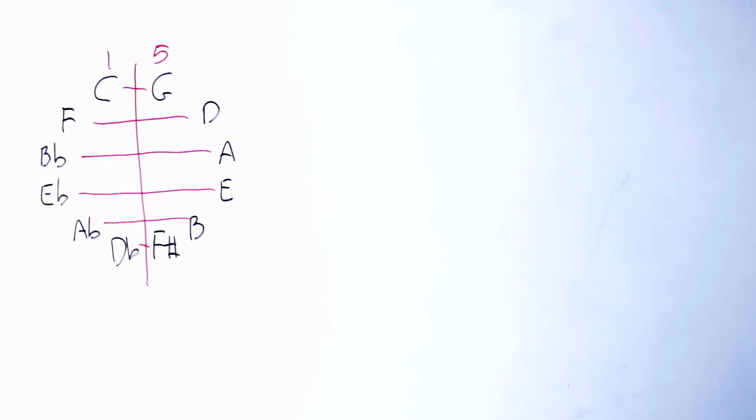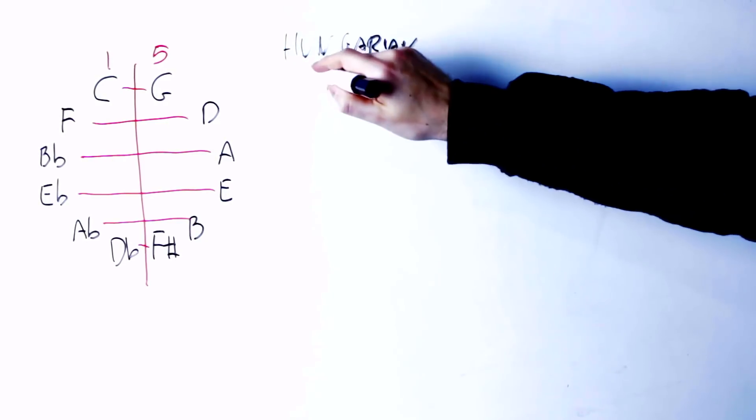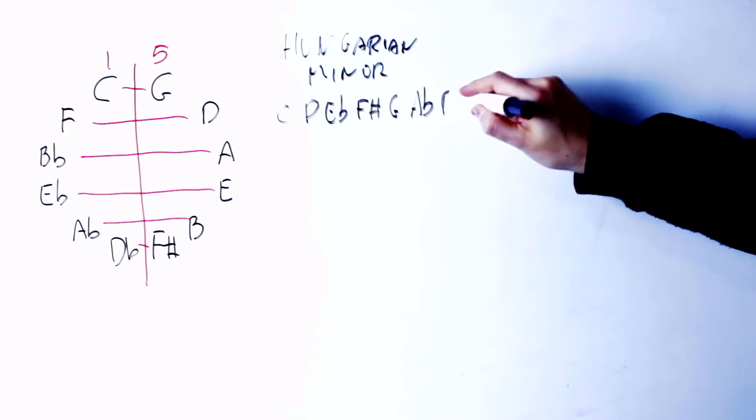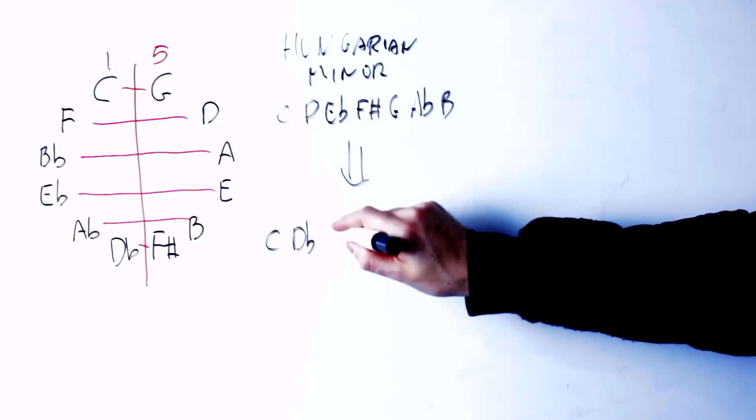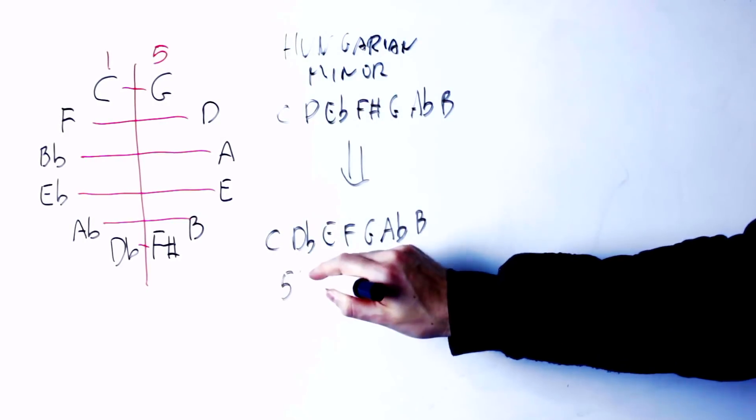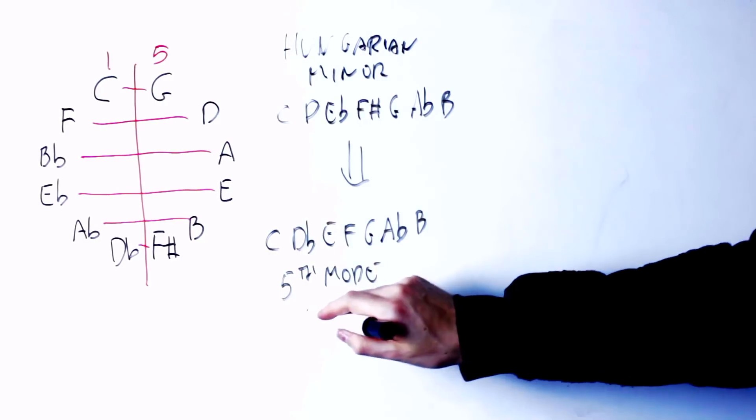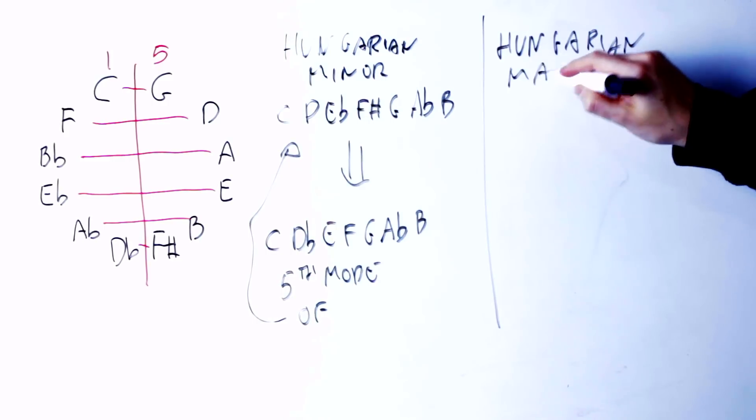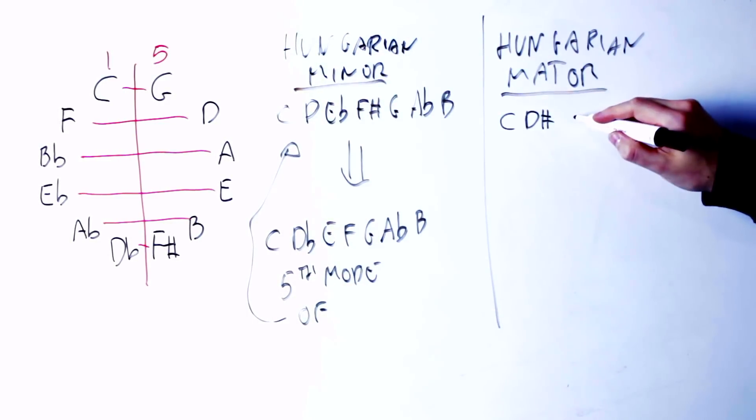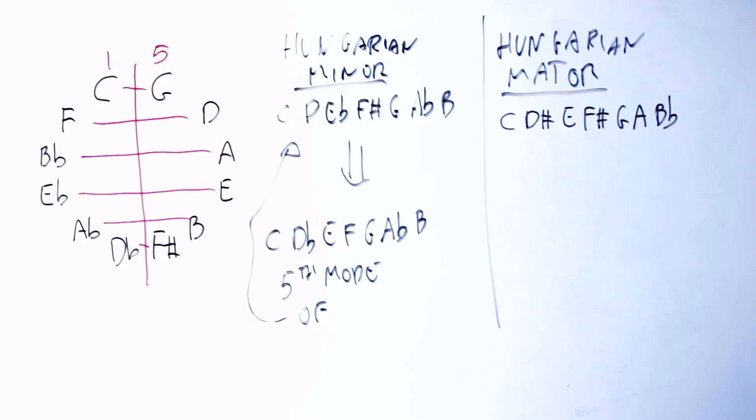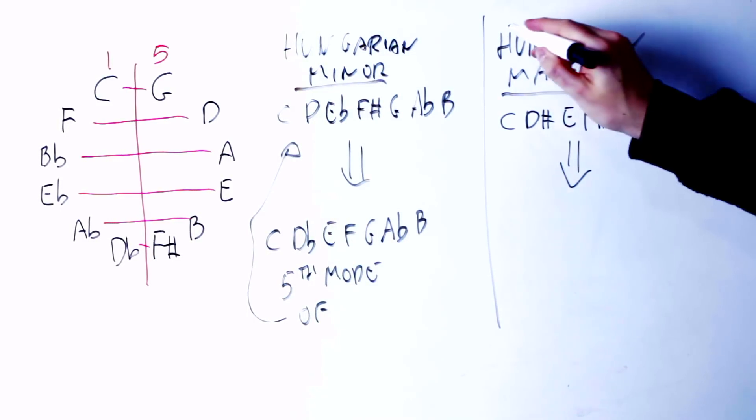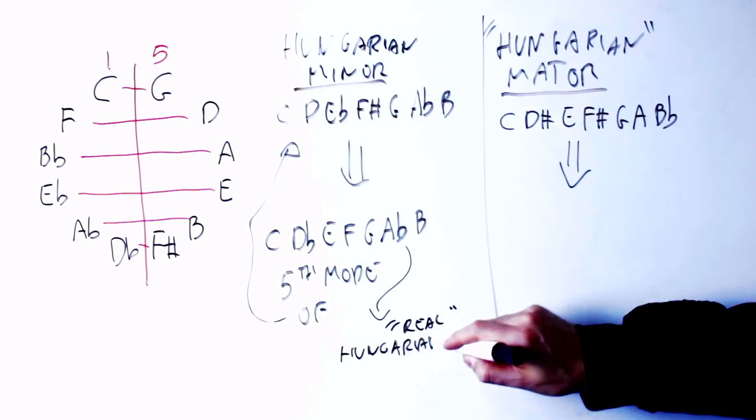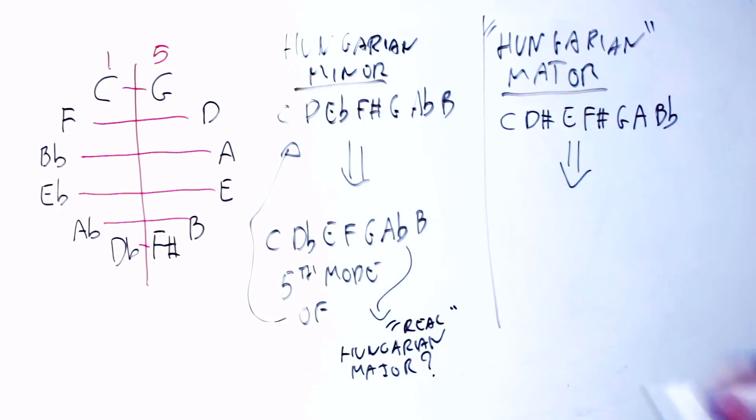If, for instance, I take the Hungarian minor scale, this is C, D, E flat, F sharp, G, A flat, B. If I apply negative harmony and reorder the notes from C, I obtain C, D flat, E, F, G, A flat, B. This is not the Hungarian major scale, sadly, but this is the fifth mode of the Hungarian minor scale. The Hungarian major scale, instead, is C, D sharp, E, F sharp, G, A, B flat. We already know that the Hungarian major scale is really not an Hungarian scale, so maybe the other scale should be called the Hungarian major scale.